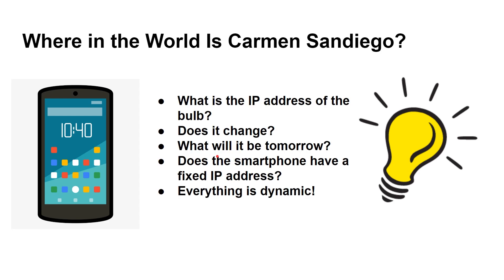The problem we've got is that most addressing nowadays is dynamic. What is the IP address of the light bulb? Imagine if you had to set up all the light bulbs in your house to have fixed IP addresses — you'd need to keep a document of all the addresses you've allocated and start doing your own network administration. If you're using DHCP from a router, will it change tomorrow? Everything's dynamic. It's very hard to know how you get a reliable connection between these two devices.